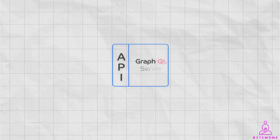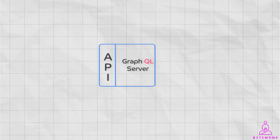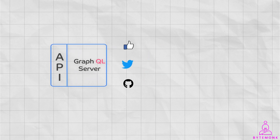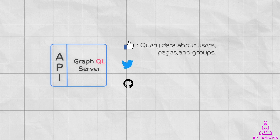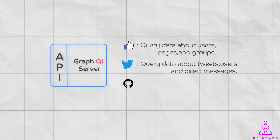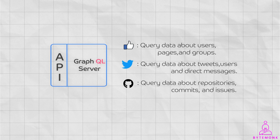GraphQL is a relatively newer API architecture and is not as widely understood or supported by tools and frameworks as REST. However, it is used by many large companies such as Facebook, Twitter, and GitHub. Facebook uses GraphQL to power its Graph API for querying data about users, pages, and groups; Twitter uses it to query tweets, users, and direct messages; and GitHub uses it to query repositories, commits, and issues. GraphQL is gaining popularity and is likely to become the standard API architecture in the future.